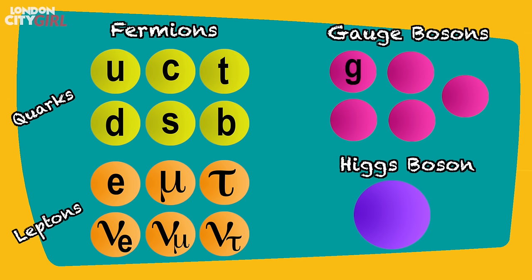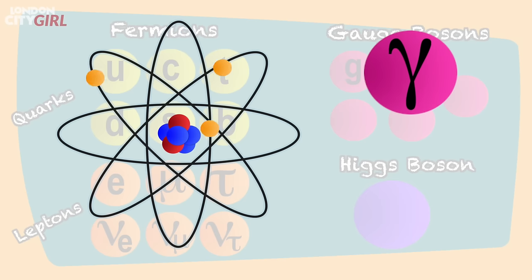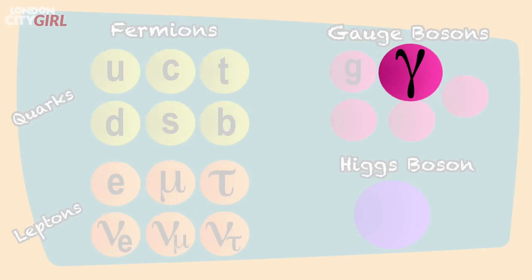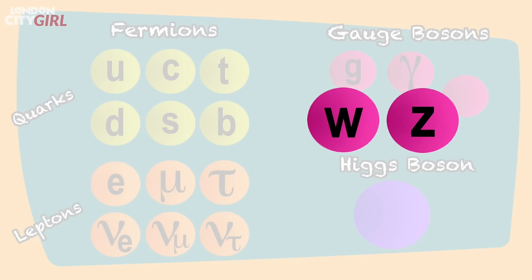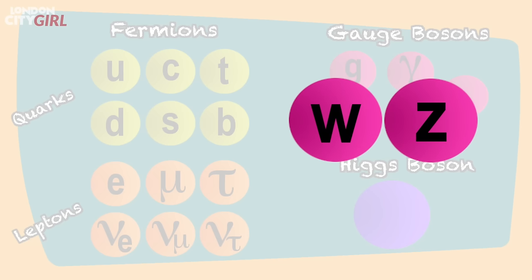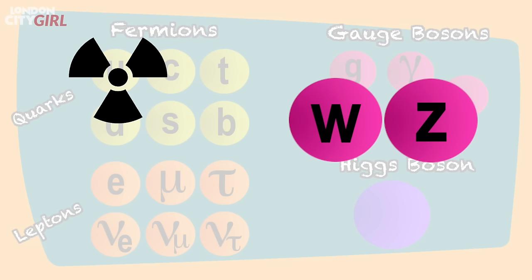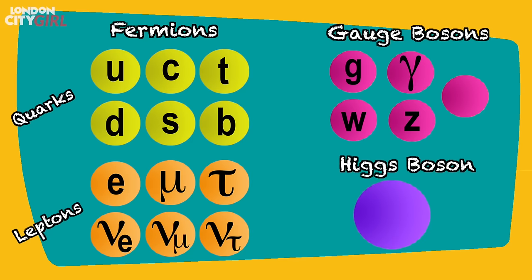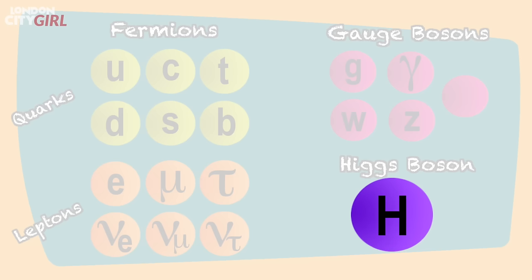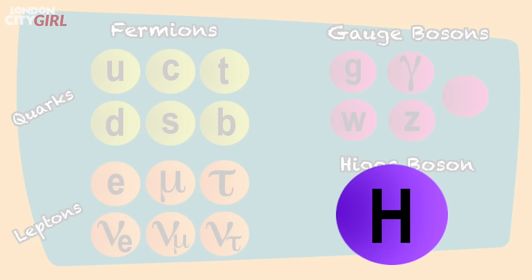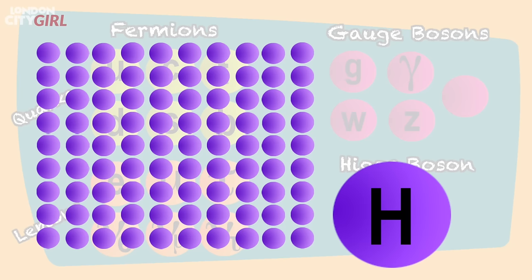The gluons we have discussed already. The photons are particles of light and carry the electromagnetic force which holds the electrons in atoms. The W and Z bosons carry the weak nuclear force, which is involved in some forms of radioactivity and plays a role in how the sun burns. Owing to the discovery of the Higgs boson in 2012, that particular particle has achieved something of a celebrity status. Countless Higgs bosons make up the Higgs field and it is the interaction with this field that gives other particles their mass.